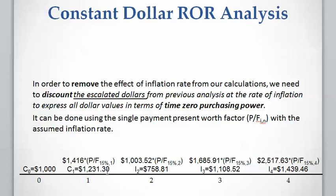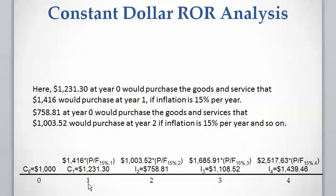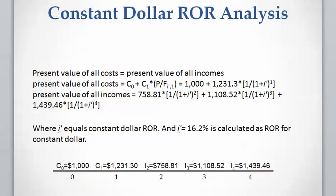We calculate the result, which gives the constant dollar cash flow. For example, twelve hundred thirty-one dollars at year zero would have the same purchasing power as fourteen hundred sixteen dollars in year one. To calculate the rate of return for this constant dollar cash flow, the equation is again: present value of costs equals present value of income. We have two constant dollar costs and three incomes. Solving for i, we calculate the constant dollar rate of return as 16.2 percent.